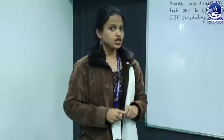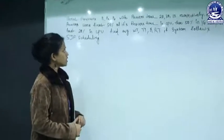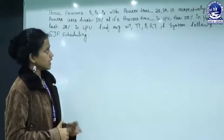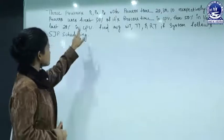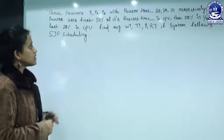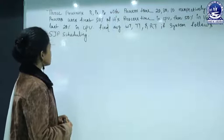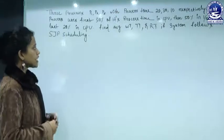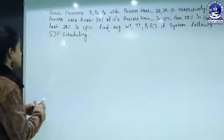Look at the question. There are three processes P1, P2, P3 with process times 20, 30, 10 respectively. Each process uses first 30 percent of its process time in CPU, then 50 percent in IO, and last 20 percent in CPU. Find average waiting time, turnaround time, and response time if the system follows SJF scheduling.